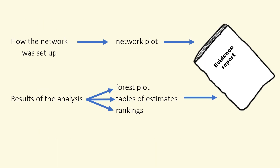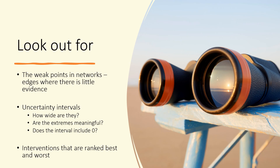We have covered four ways to present the results from a network meta-analysis: the network plot shows you what we have compared and the evidence it is based on; the forest plot shows you whether interventions were different to a reference; the triangle table shows you whether some interventions were better than others; and the rankings provide information on the ordering of the interventions in terms of effectiveness. We need to look out for weak points in our networks where the studies may be small or variable, be aware of the uncertainty intervals, and interpret the rankings together with the relative effects — being cautious of rankings where there is a lot of uncertainty with interventions ranked both best and worst.